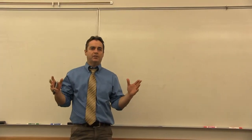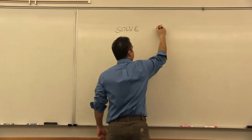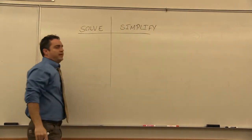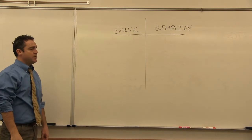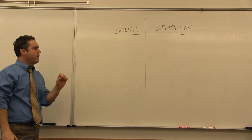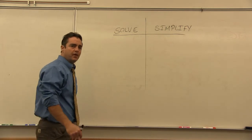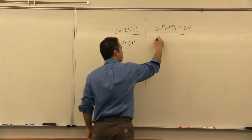Now we'll go a little bit deeper into how to use these properties to simplify algebraic expressions. We have two kinds of problems in all of algebra: solve problems and simplify problems. The piece that reveals which kind we're dealing with is the equal sign. Solve problems have equal signs, and simplified problems don't.